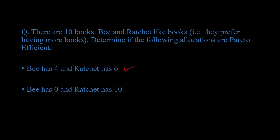B has zero and Ratchet has ten. In order to make B better off, we'd have to take books from Ratchet, which will definitely make Ratchet worse off. And we can't take anything from B because he doesn't have anything. Again, this is a Pareto efficient allocation, which kind of seems unfair for B. But do note that Pareto efficiency does not really care about equity — there is no relationship whatsoever between Pareto efficiency and equity. Anyway, hope you're getting a hang of this. Let's keep moving.